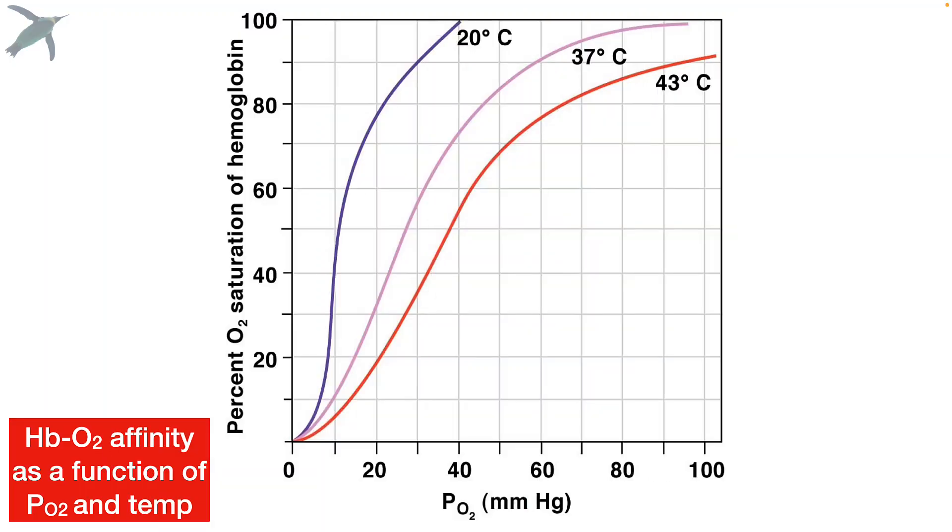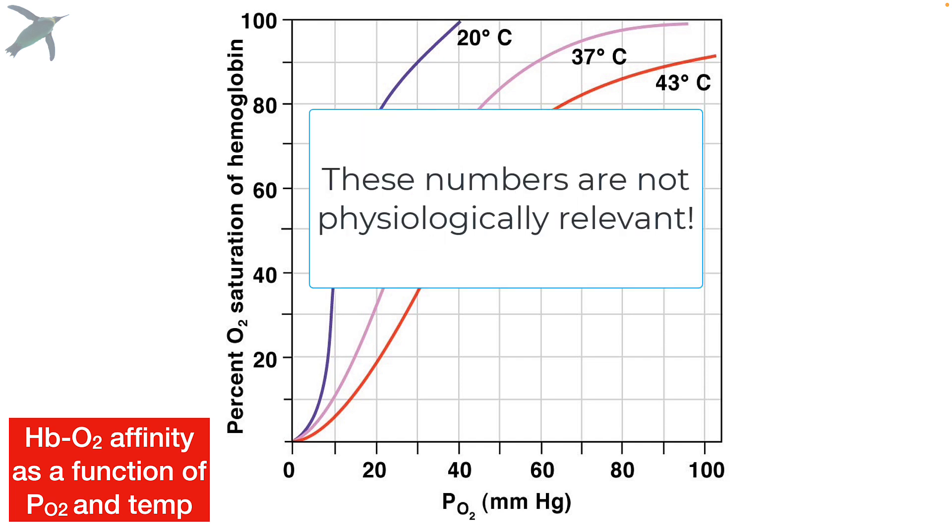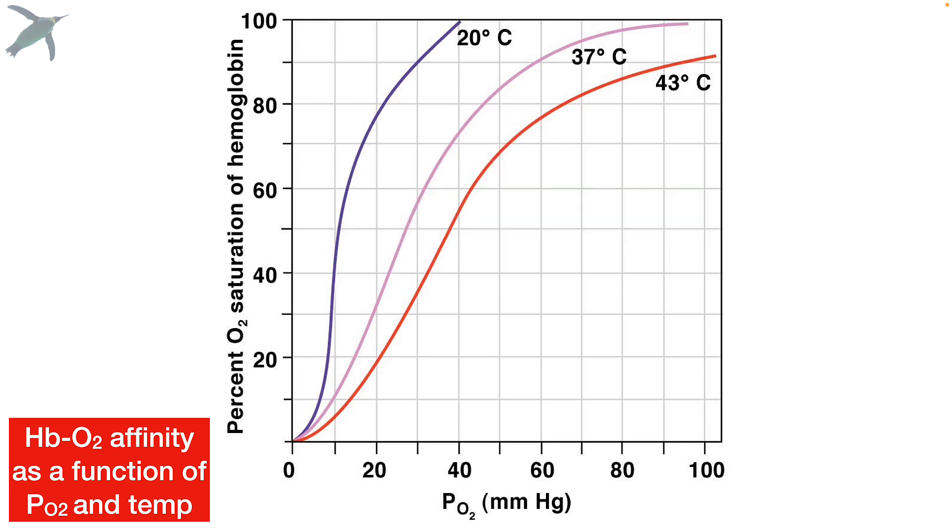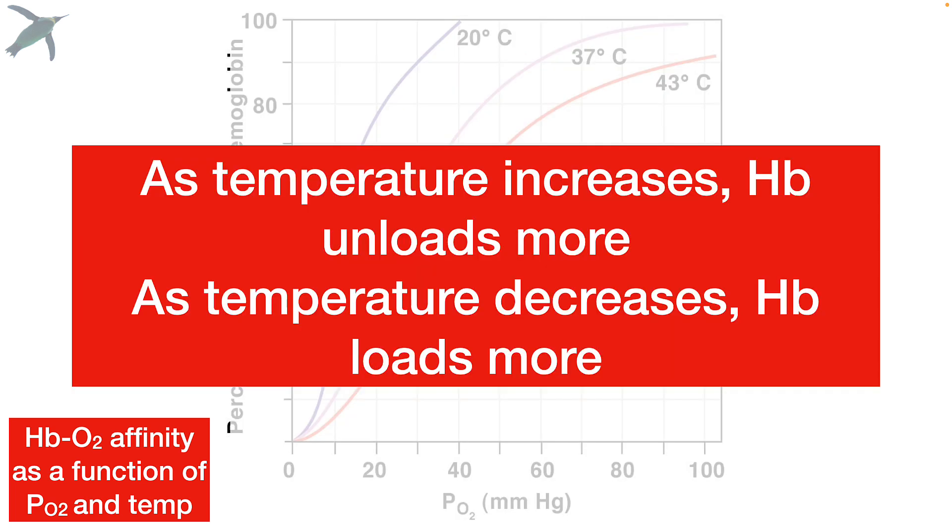Let's keep going and we'll make sense of this. What about temperature? So again, now you try it. Pick a PO2. You can stick with 40 if you like. And see what happens as the temperature changes from 37, which is normal body temperature. What about when temperature decreases and goes to 20? These are not necessarily physiologically relevant numbers. It's just to illustrate what happens to the curve. And now see what happens when the temperature increases to 43. As temperature increases, hemoglobin unloads more. And as temperature decreases, hemoglobin loads more.